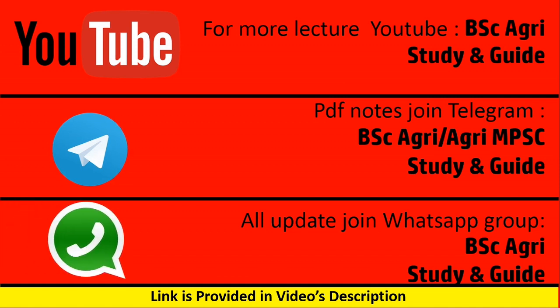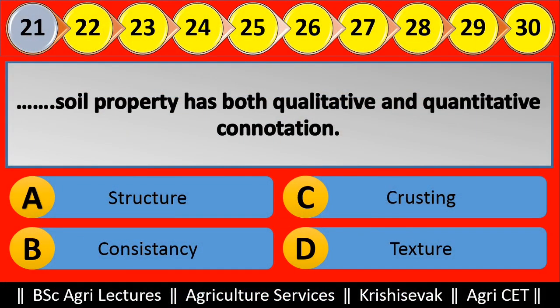Question 21: Blank soil property has both qualitative and quantitative connotation. Options are: (a) Structure, (b) Consistency, (c) Crusting, (d) Texture. Right answer is Texture, option D.